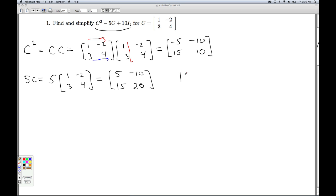And the last ingredient is this 10I₂. I₂ is the 2×2 identity matrix, and once again, those are diagonal matrices with 1s on the main diagonal and 0s everywhere else. Multiply 10 to each of those entries, you get that.